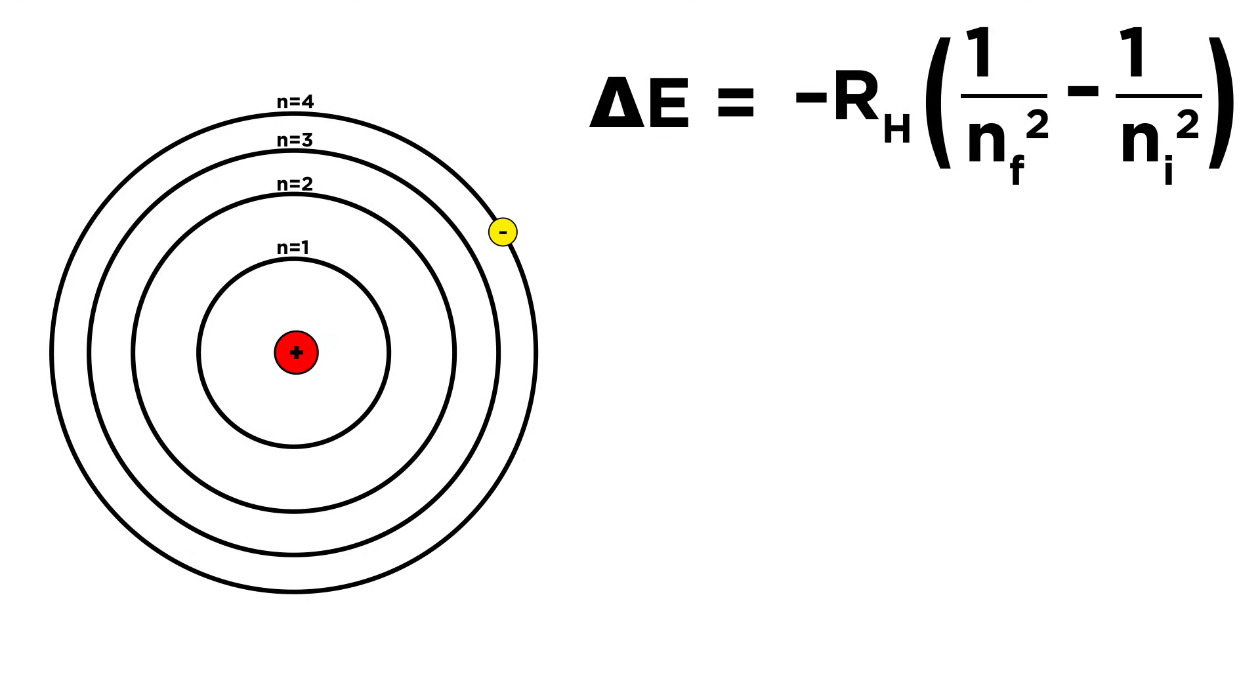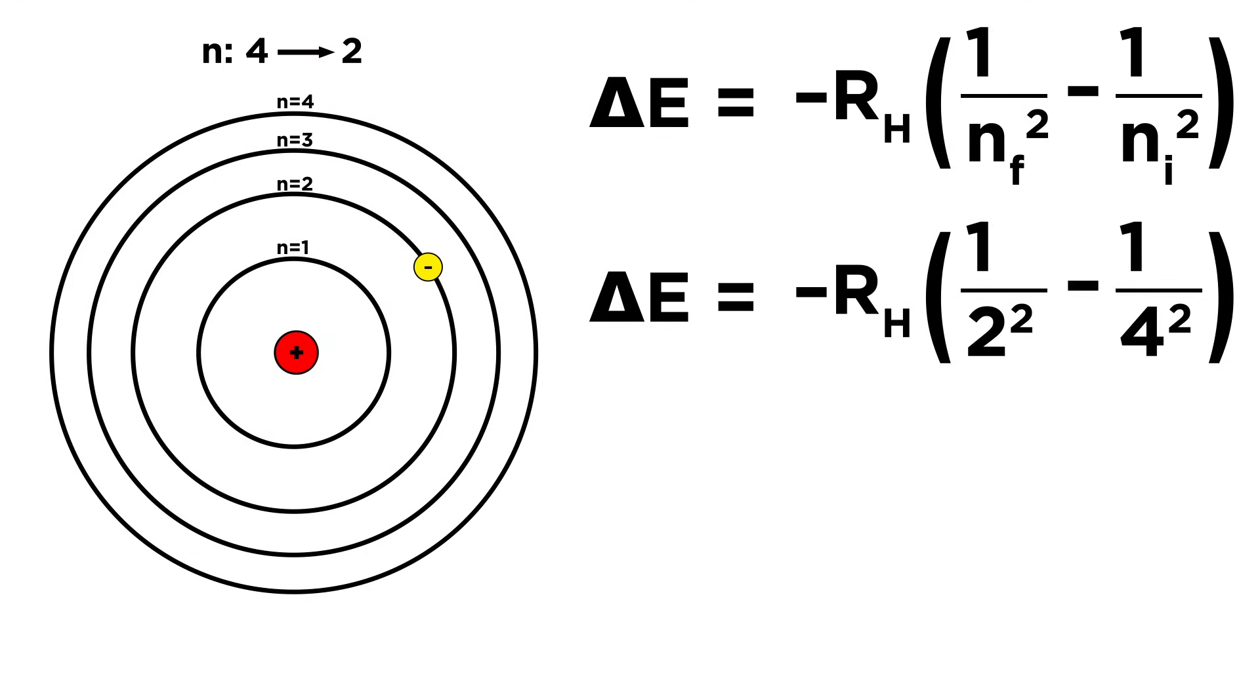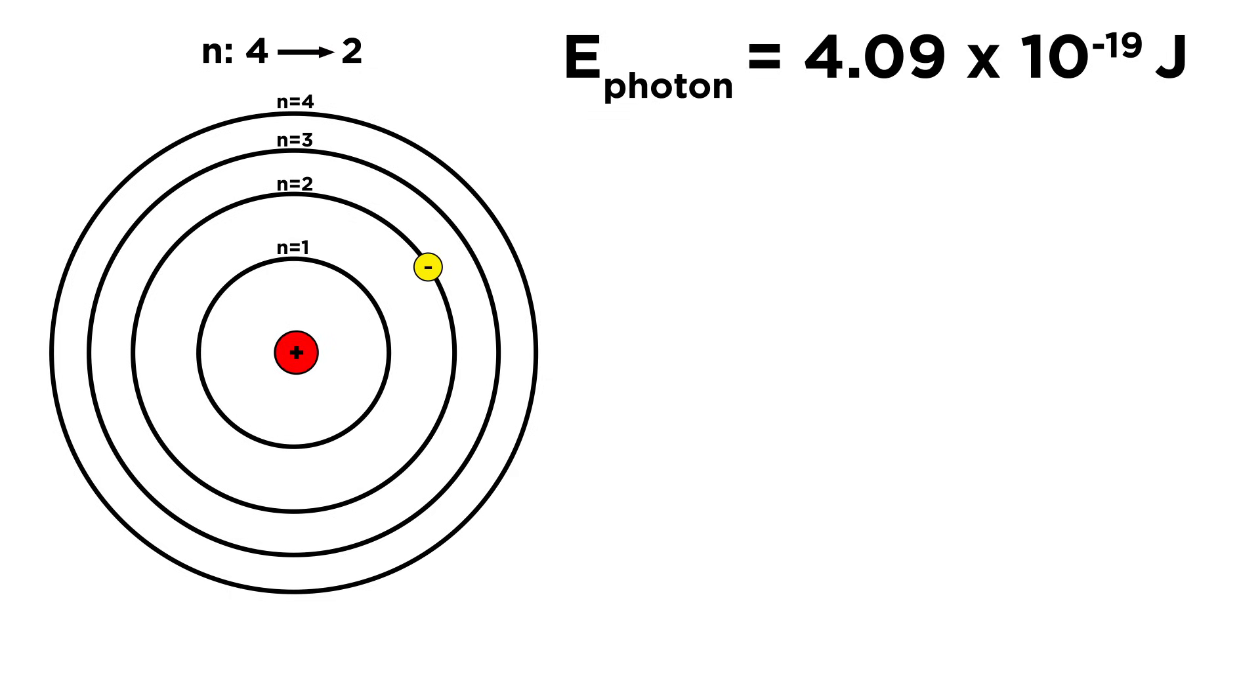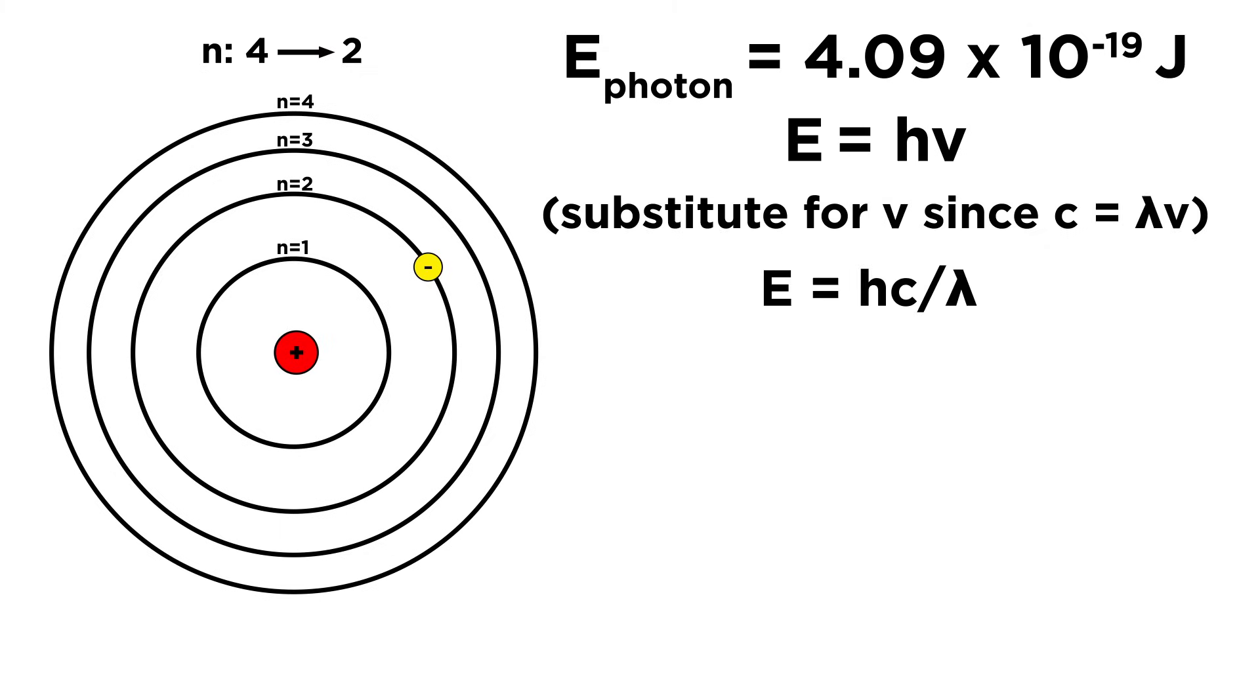Take this transition for example from four to two. Plug in where the electron starts and where it ends and we get the change in energy of the electron which equals the energy of the photon. From energy we can get frequency, and from frequency we can get wavelength.